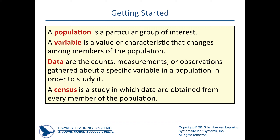Data are just things that we collect — counts, measurements, observations — depending on what we're looking at: height, car color, eye color, or favorite sports team. These are things we can collect on subjects in our study. A census is a study in which data are obtained from every member of the population.